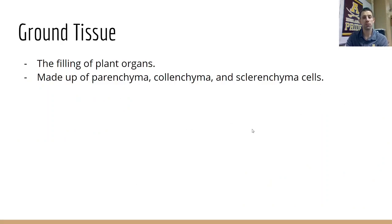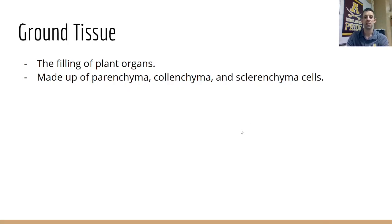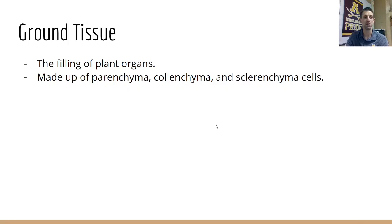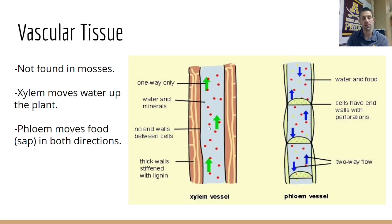The ground tissue is just the filling space, made up of those three cell types — parenchyma, collenchyma, and sclerenchyma. These are just the cells that fill up all of the empty space inside of plant structures.